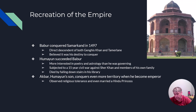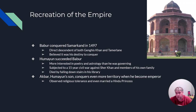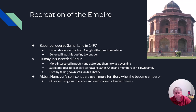Humayun takes control of the empire after his father dies, but he's more interested in poetry and astrology than governing. He builds a giant library called the Sher Mandal. He faces a revolt from an Afghan leader named Sher Khan, who unites parts of Humayun's own family against him, leading to a civil war lasting over 15 years. Humayun dies in 1556 — he was carrying a stack of books and fell down the staircase of his library.